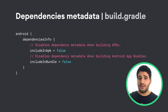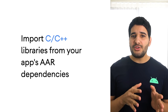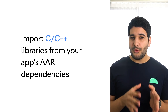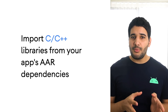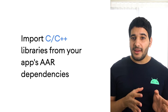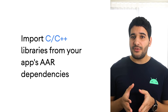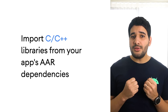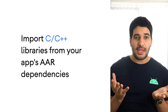If you'd rather not share this information, you can opt out by including the following code in your module's build Gradle file. Starting with Android Gradle Plugin 4.0, you can now import C and C++ libraries from your app's AAR dependencies. Gradle will make these native libraries available to use with your external native build system, such as CMake or NDK build.